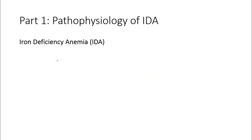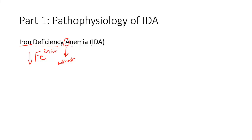Iron deficiency anemia. What is the chemical symbol for iron? It is Fe. Iron can exist in the 2-plus or the 3-plus state. Deficiency means we have a little bit of it. Anemia — when you see the prefix 'a', like in avascular, it means without something. Anemia comes from 'heme,' the Greek word for blood.